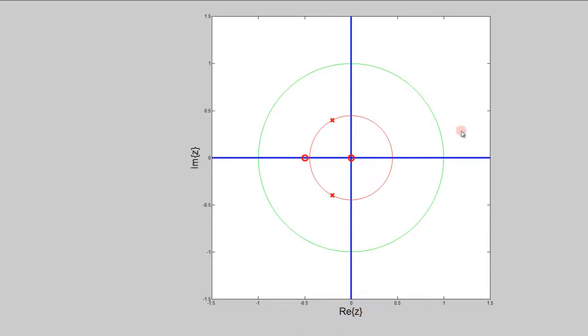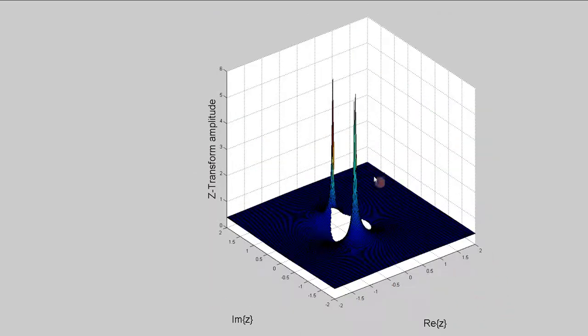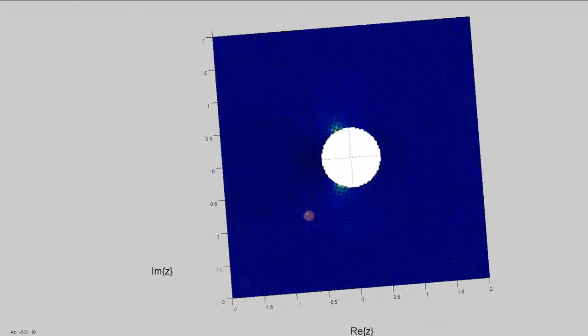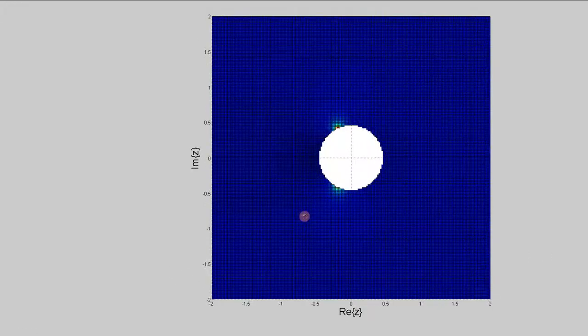This has all the information about the Z-transform, but we can also look at this kind of plot. If we look from a two-dimensional point of view, we see the same thing, where we have the region of convergence. Here I've made it be outside these poles, so the function is defined for everything outside the circle with these two poles.